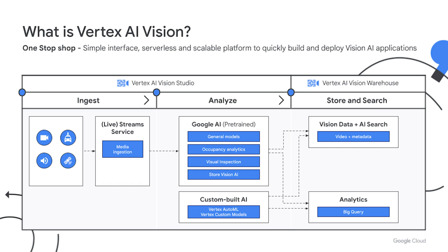Today I'm pleased to announce that we're launching Vertex AI Vision in public preview. With Vertex AI Vision, you can ingest media from live cameras or existing data, process media using either state-of-the-art pre-trained AI models or custom-built models, store data in Vision Warehouse which comes with powerful search capabilities, and finally analyze the data and serve meaningful, actionable business insights to your customers. You can do all of this in the single user interface of Vertex AI Vision Studio or via the SDK for expanded capabilities.